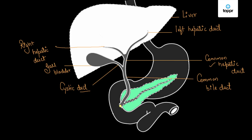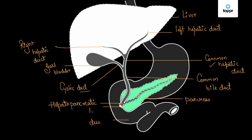This common bile duct combines further with the pancreatic duct. The green organ shown here is the pancreas. Pancreas gives out a duct called the pancreatic duct, and the combination of the common bile duct and the pancreatic duct forms the hepato-pancreatic duct, which opens into the duodenum. The yellow-colored opening of the hepato-pancreatic duct is called the ampulla of Vater, which guards the opening of the hepato-pancreatic duct.